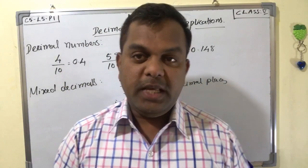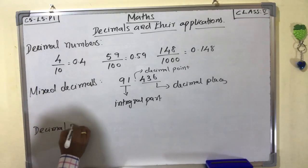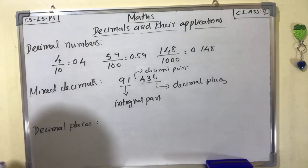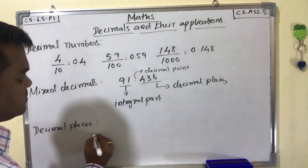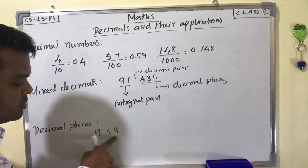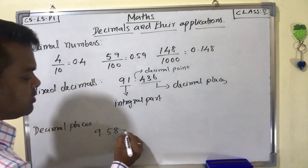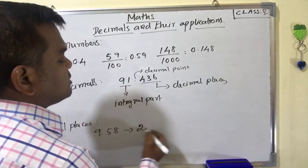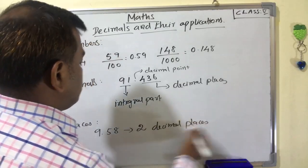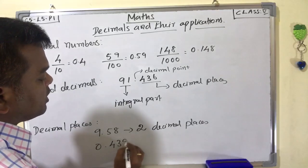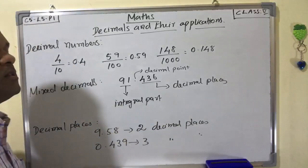Next, decimal places. Decimal places are the places after the decimal point. For example, 9.58 — there are two places after the decimal point, so it has two decimal places. Another example: 0.439 — after the decimal point we count 1, 2, 3 — three places, so three decimal places.